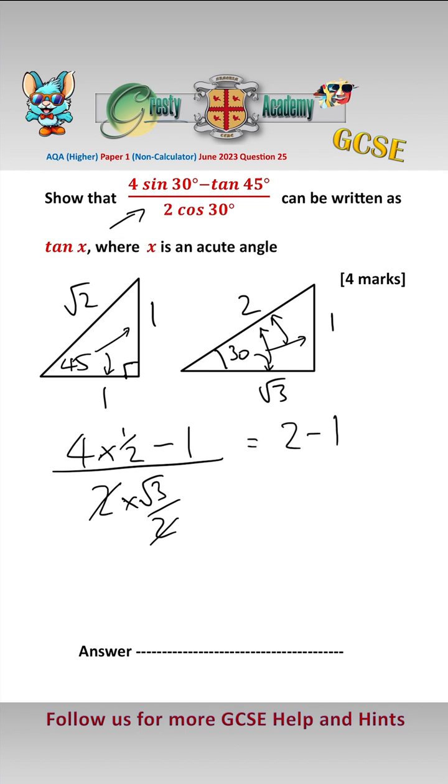Now the 2 cancels here. 4 times a half is equal to 2, so 2 take away 1 over root 3, which equals 1 over root 3. And we have to find that that is written as tan of an angle. Well, tan of 30, opposite over adjacent, is 1 over root 3, so therefore we can write this as tan x being tan 30.